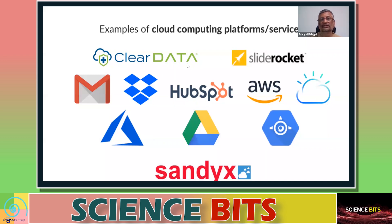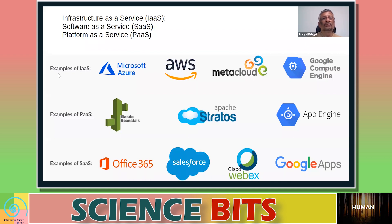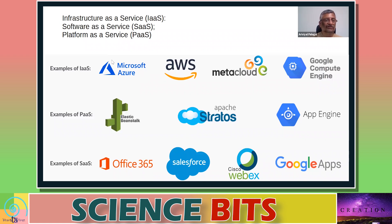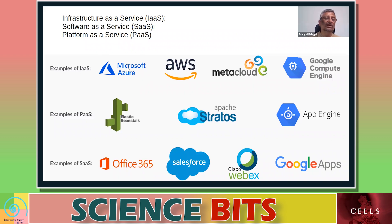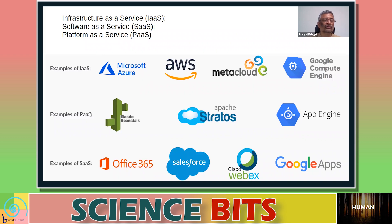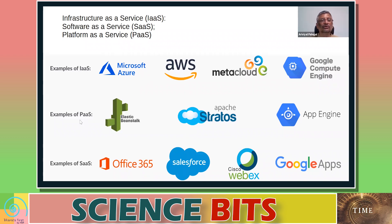Examples of infrastructure include Microsoft Azure or AWS. These are infrastructure services, meaning you are using another computer's capabilities — using that infrastructure for your work for as long as you need it, whether paid or free.